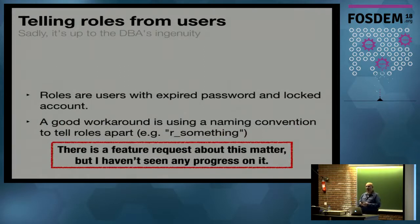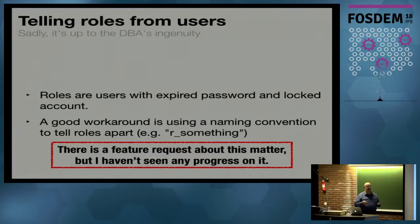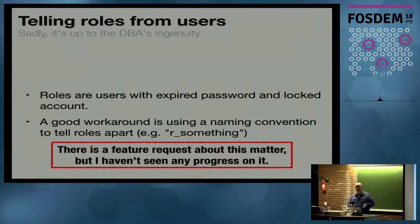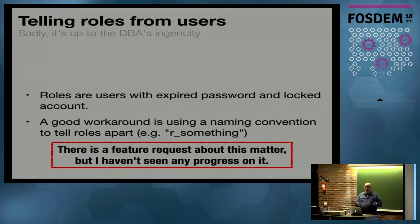Telling roles from users — as an administrator I would like to know, can I list just the roles? But there is no feature for that. The thing you should do is adopt a naming convention — for example, start role names with 'R underscore something', and only the roles will start that way. I know there is a feature request for this, but I'm not holding my breath.